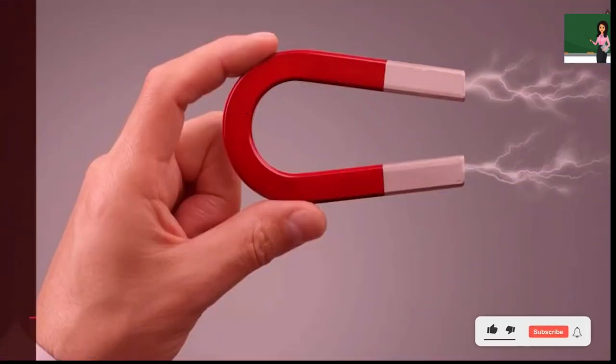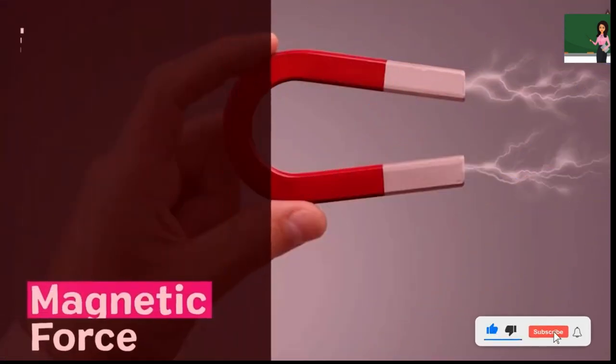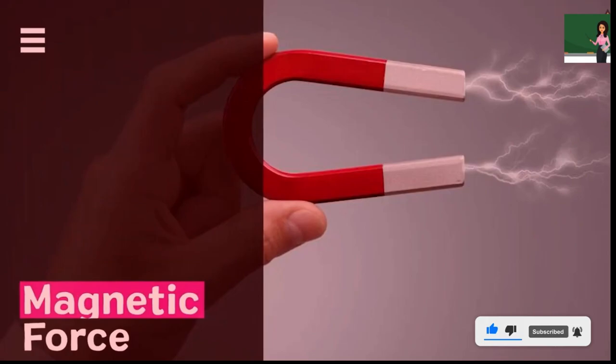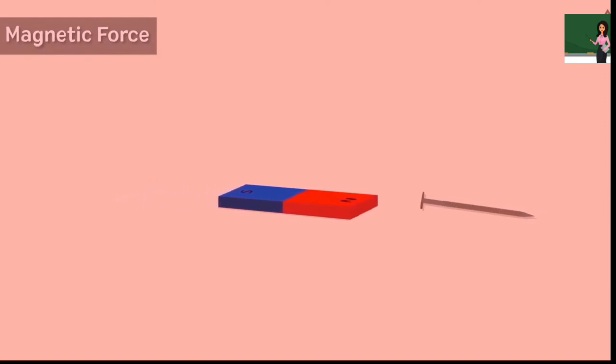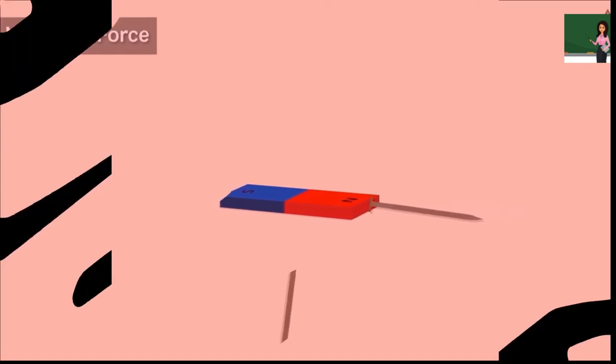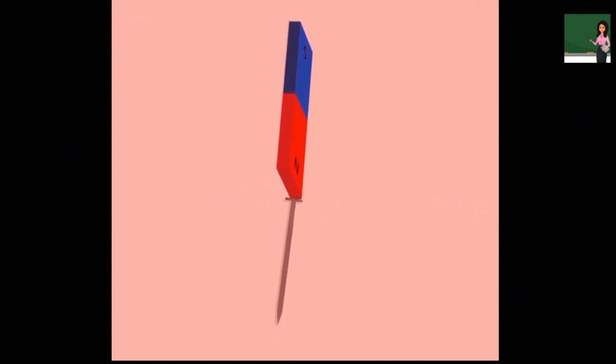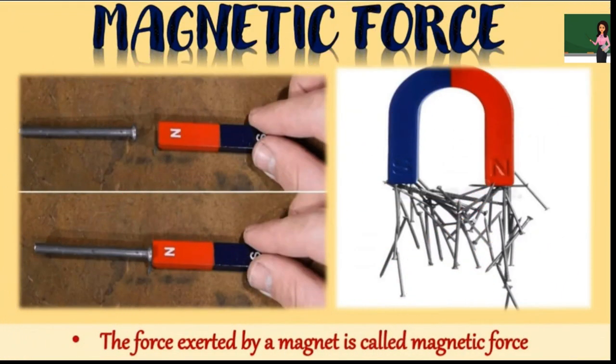Magnetic force. Place a magnet on a table. Take a big iron nail towards the magnet. It sticks to the magnet. Now hold the magnet upright in the air, away from the nail. What happens? The force exerted by a magnet is called magnetic force.